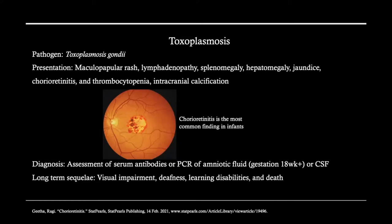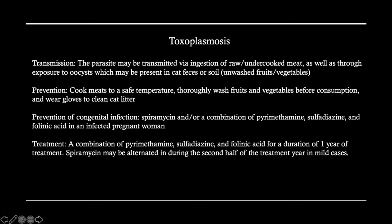Long-term effects of toxoplasmosis include visual impairment, deafness, learning disabilities, and even death. The parasite is transmitted via ingestion of raw or undercooked meat, as well as exposure to cat feces or soil, so it's important to cook meat safely and thoroughly wash fruits and vegetables. If a pregnant woman becomes infected, treatment including spiramycin and a combination of other agents should be utilized to prevent congenital transmission. If a baby develops toxoplasmosis, those similar agents are used for a year's duration of treatment.